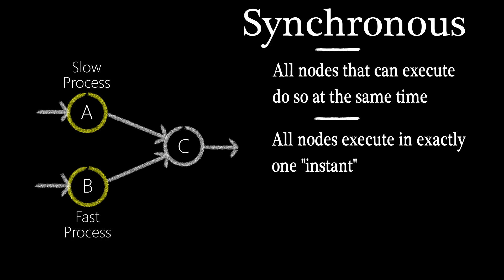An instant has no bearing on real-world time. It is simply a name we give to the time required to execute all the nodes that can execute. Now that A is also done, we can transfer both the outputs to C. Synchronous systems are only as fast as its slowest node.